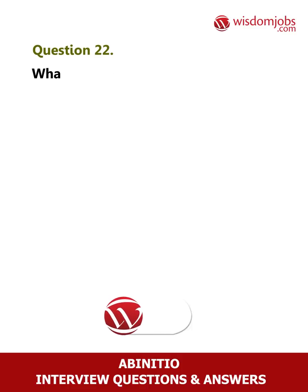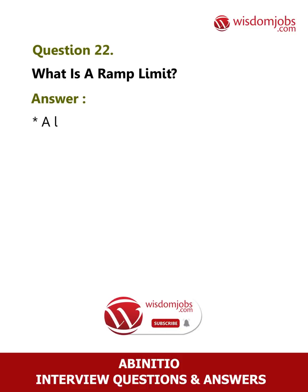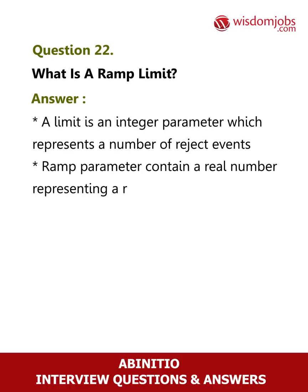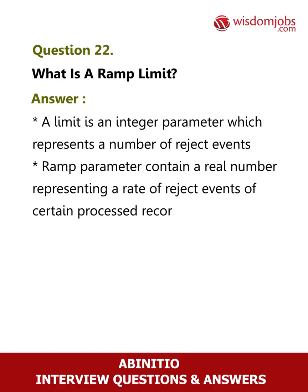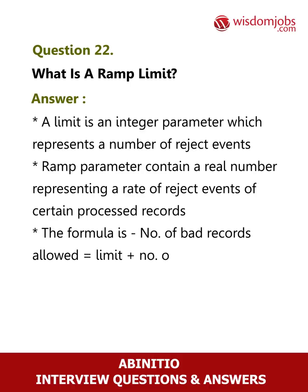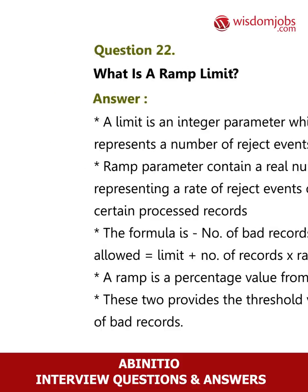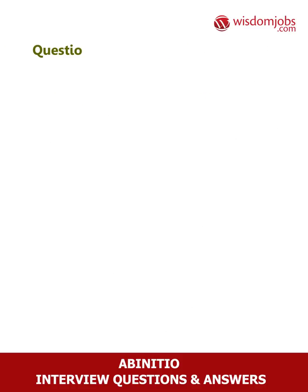Question 22: What is a ramp limit? Answer: A limit is an integer parameter representing a number of reject events. A ramp parameter contains a real number representing a rate of reject events of certain processed records. The formula is: number of bad records allowed = limit + (number of records × ramp). Ramp is a percentage value from zero to one. These two together provide the threshold value of bad records.